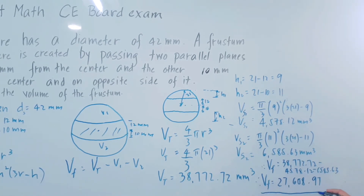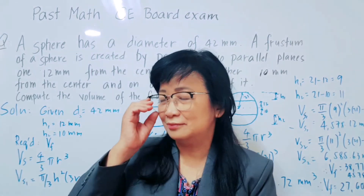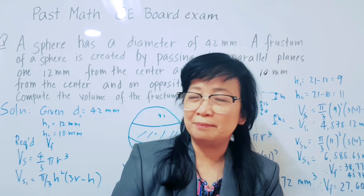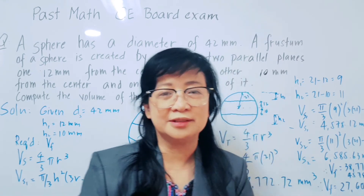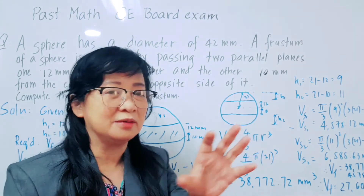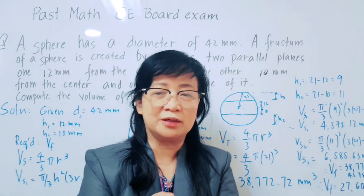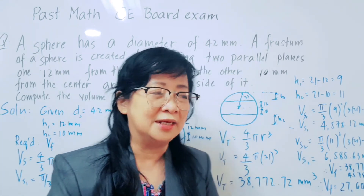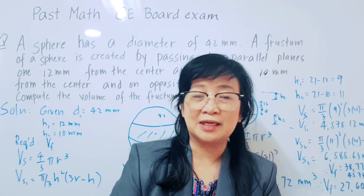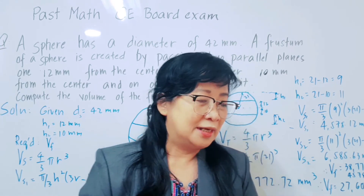This is the volume of the frustum of a sphere — 27,608.97 mm³. Again, let me give you some advice: if you really want to pass the board exam, you need practice, practice, practice — problem solving. Memorize the formulas; post them on your walls, or keep a small booklet of formulas. Wherever you go, memorize the formulas and know how to apply them.